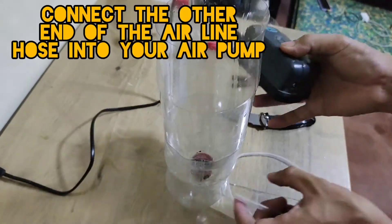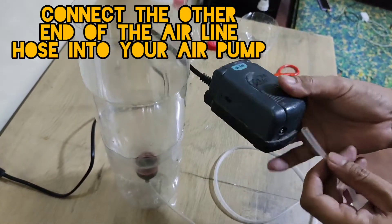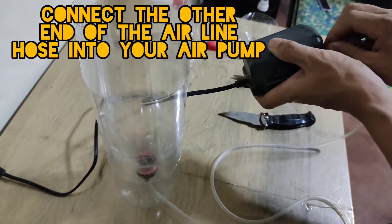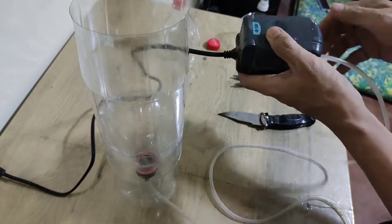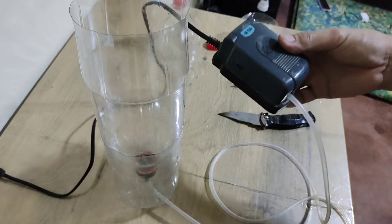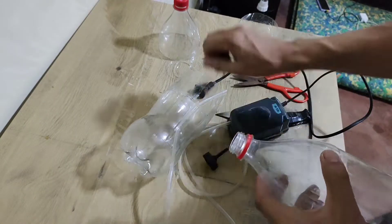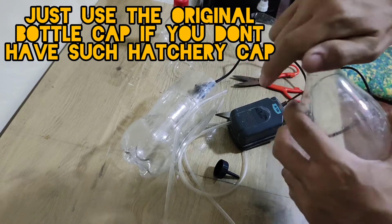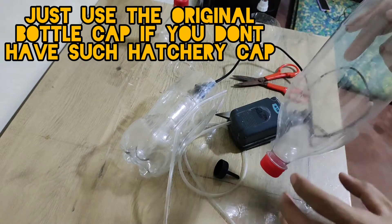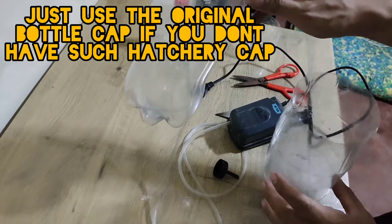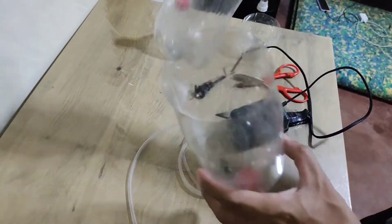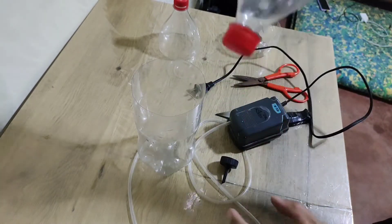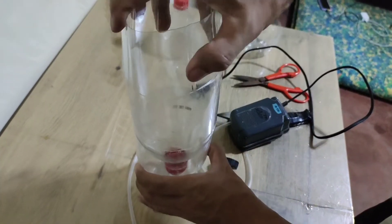Now we connect the other end of the airline tubing to our air pump. So this is now ready to use. If you don't have this kind of hatchery cap, you can just use the original bottle cap and place it into its base so the hatchery can stand on its own.